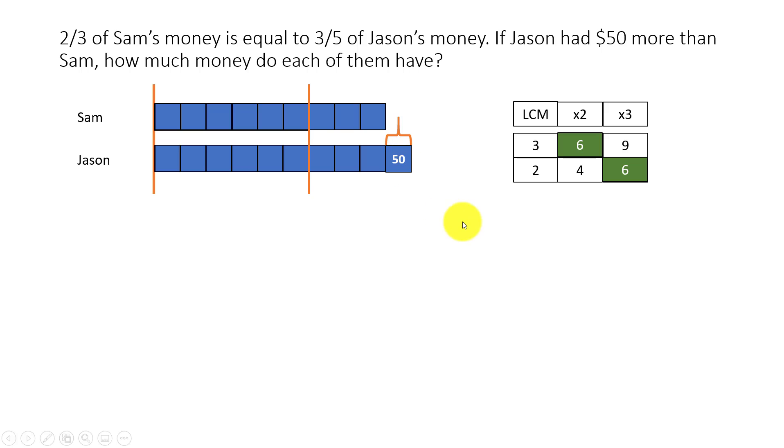From here, solving the problem is easy because we know that Sam has how many units? It's nine units. Basically, three times three is total is nine units here: one, two, three, four, five, six, seven, eight, nine units. Sam has nine units and we know that one unit is 50. Remember, these are all equal sized units, so each of them will be 50. Nine times 50 is 450. The amount of money Sam has is $450.